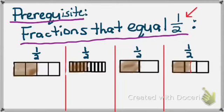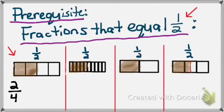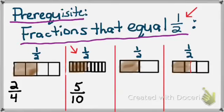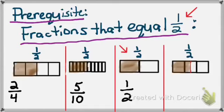Our prerequisite review for fractions that equal 1 half. In the first picture, the Hershey bar is broken into 4 pieces and we have 2 of them — 2 fourths equals 1 half. Because the denominator 4 is even, half of that is 2, so my numerator is half of my denominator. Next picture: 10 pieces, we have 5 — 5 tenths equals 1 half. Third picture: 2 pieces, we have 1 — 1 half equals 1 half. When the numerator is half of the denominator, the fraction equals 1 half.